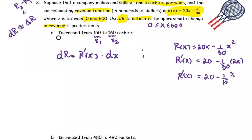And the other term that we're going to use is the differential x or delta x. Delta x is the difference of two x values. The last number is 160. The first number is 150. So the change is 10 or increase by 10 rackets.